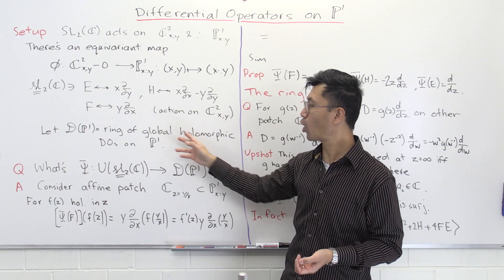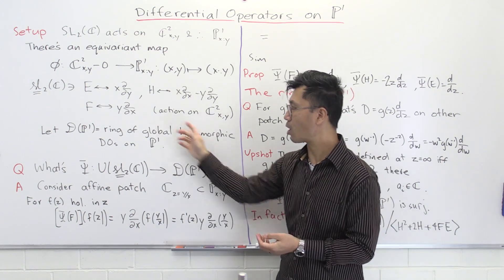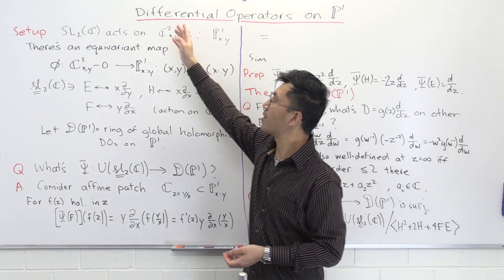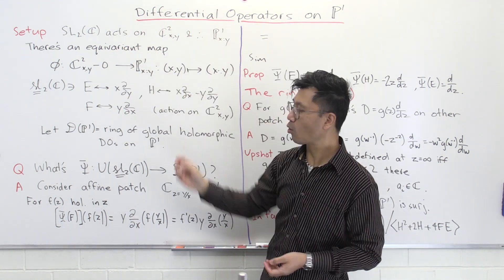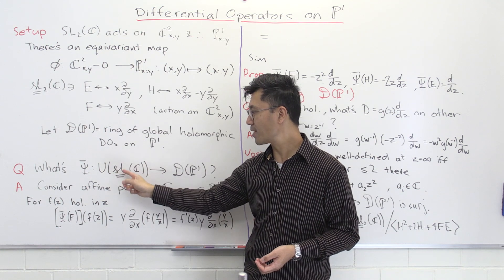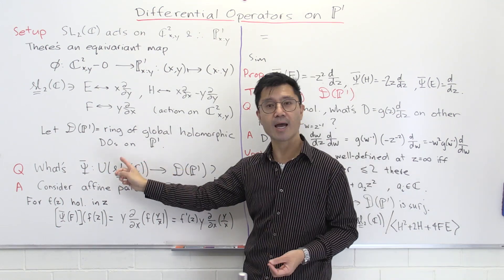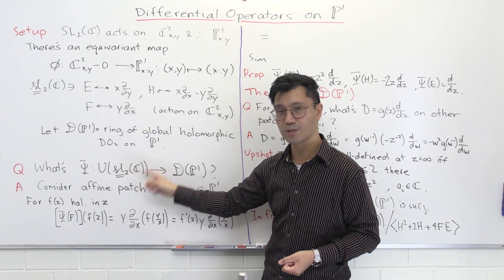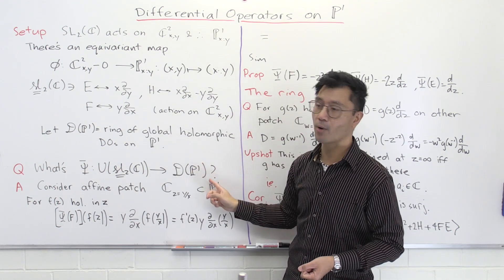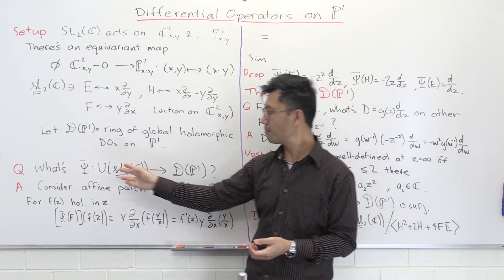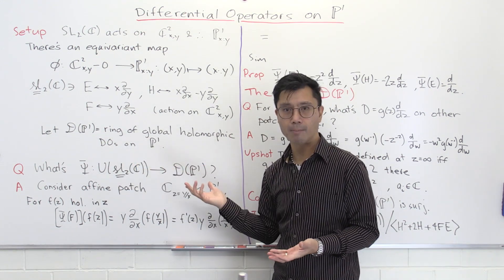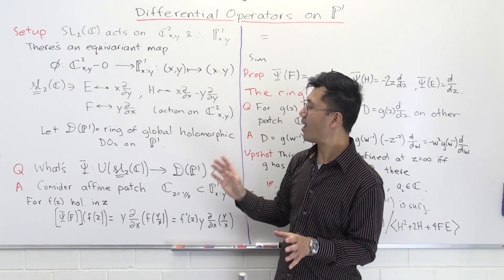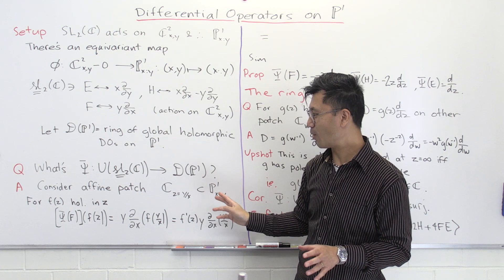Let D(P1) be the ring of global holomorphic differential operators on P1. Since SL2C acts on P1, there will also be a representation of U(SL2C) via differential operators on P1 — in other words, an algebra homomorphism psi from the universal enveloping algebra of SL2C to differential operators on P1. The natural question is: what is this map? We're going to calculate that right here.